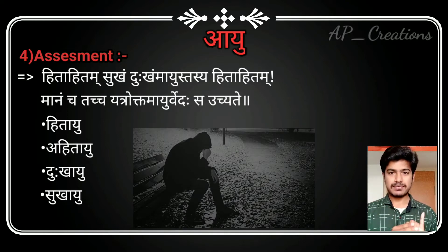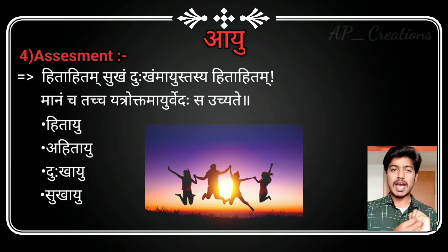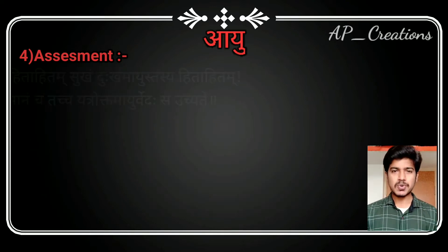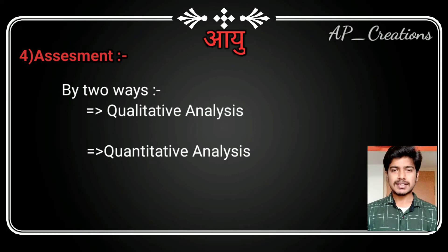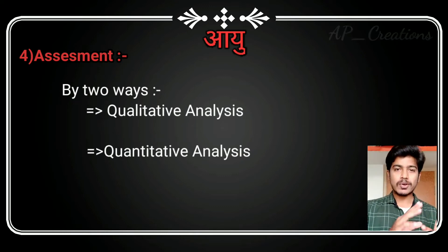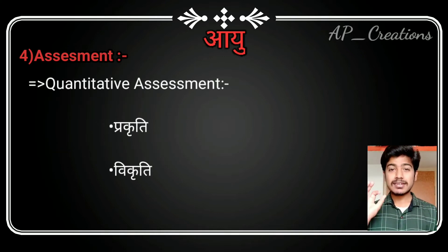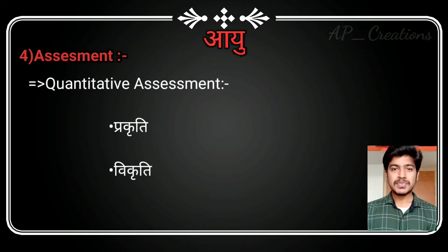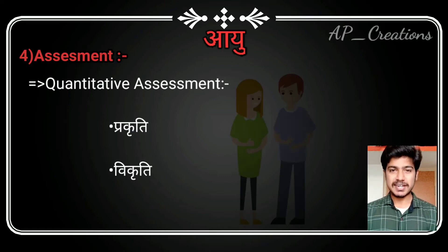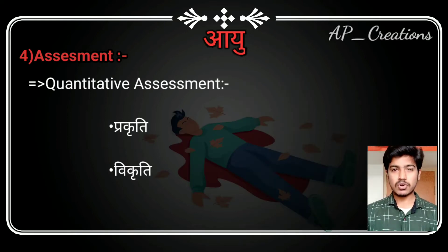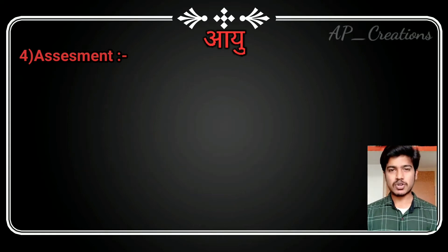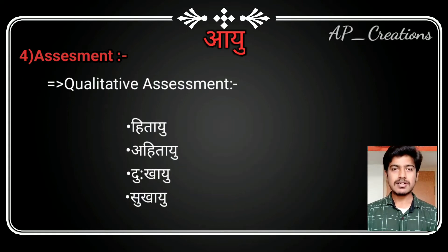Assessment of ayu is done in two ways: by analyzing quality and quantity. According to quantity, there are prakruti and vikruti — prakruti refers to the living body or living entity, while vikruti refers to the dead body or dead entity. The qualitative analysis includes hita ayu, ahita ayu, sukha ayu, and duhkha ayu. This completes the fourth point, assessment.